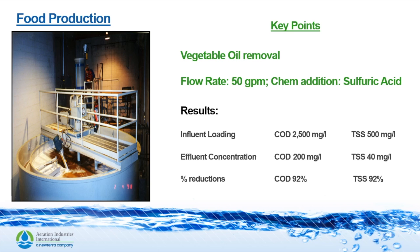Now I would like to go through a few installations of the microfloat unit. In this example, we have a food production plant that was removing vegetable oil from their processed water. The flow rate was 50 gallons a minute and they added sulfuric acid for pH adjustment. The influent loading was COD of 2,500 mg/L and TSS of 500 mg/L. The effluent concentrations were 200 mg/L COD and 50 mg/L TSS, equating to 92% removal of both COD and TSS.